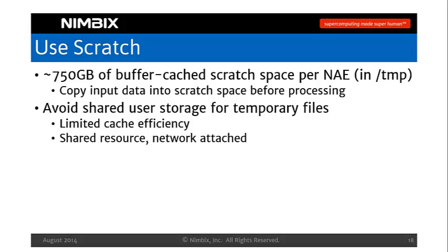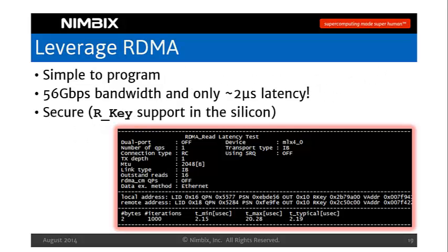User persistent storage is a shared resource that's network-attached — it's fast and reliable, but not as fast or efficient in terms of caching as the Scratch Space we provide. We strongly recommend leveraging RDMA — remote direct memory access — that InfiniBand provides. There are three good reasons: it's very easy to program, just setting up regions of memory that are automatically shared across nodes; the bus bandwidth is very strong — we use FDR InfiniBand from Mellanox, giving 56 gigabits of bandwidth and only about two microseconds of latency, tens or hundreds of times faster than Ethernet; and it is secure via R-key encryption or authentication directly on the InfiniBand cards.